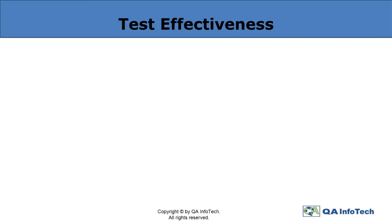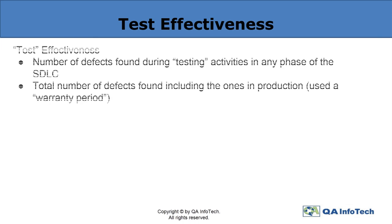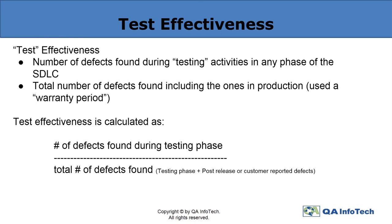Test effectiveness helps in evaluating the effect that the test environment has on the software product. It is calculated by dividing the number of defects found during the testing phase by the total defects found during the testing phase as well as post-release.